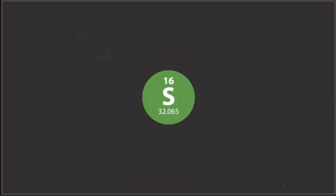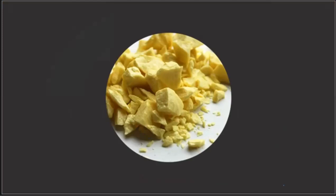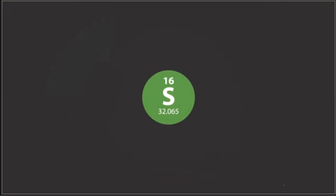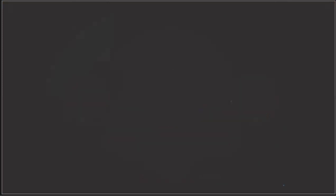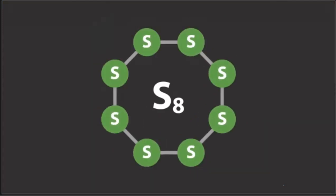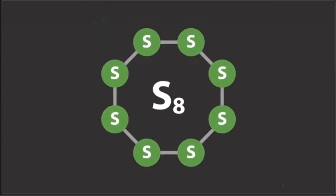Sulfur is the 16th element of the periodic table and is a nonmetal. In its elemental form, it is a bright yellow crystalline solid at room temperature. In this video we are going to look at the basic physical and chemical properties of sulfur and discover some real-life applications of sulfur-containing compounds, including how it is found in fuels and what happens when it is combusted and reacts with oxygen. The most common allotrope of sulfur is octosulfur, where eight sulfur atoms join together to form a ring structure, very prevalent in nature and commonly found around volcanoes.